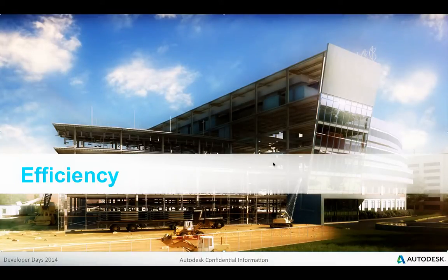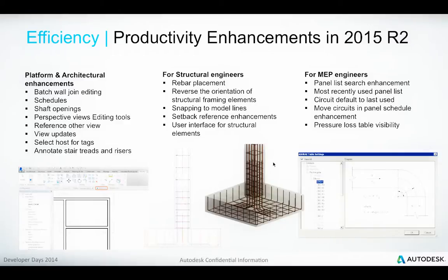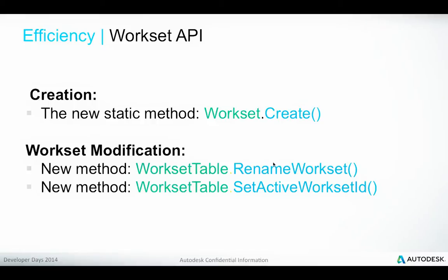Finally, we have the area of efficiency — how does the user interact with Revit? An important collection of enhancements was provided in the subscription release Revit 2015 R2, which included platform and architectural enhancements plus MEP and structural functionality, made available towards the end of 2014. It also included one API enhancement: a read-write workset API. We now have methods to create a workset and to control the name of worksets and the active workset ID. The workset API is now more than just read-only — we have complete read-write functionality.